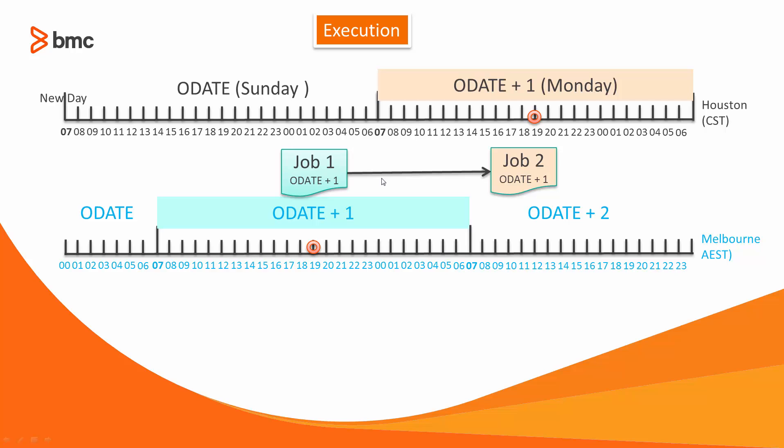Both jobs run with Monday as their order date. Having the ability to forward order the smart folder allows each job to run at its designated time zone and time.